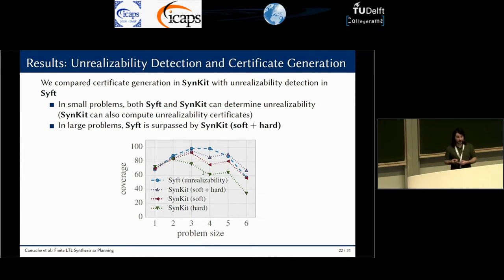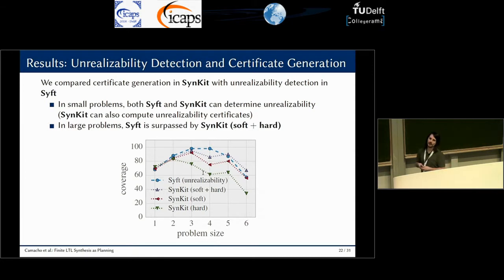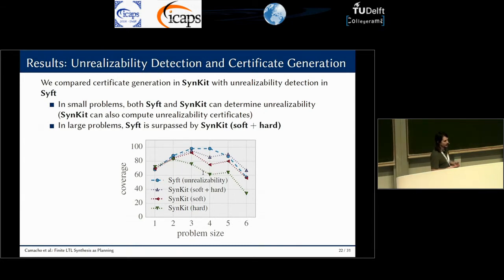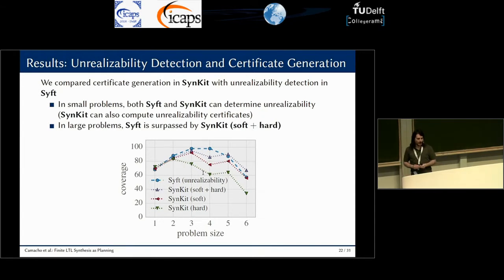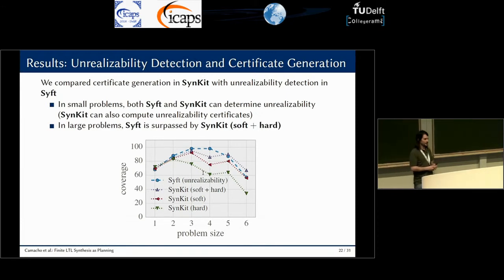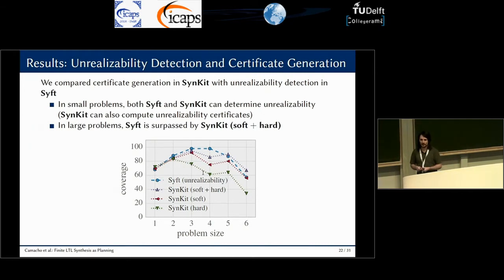In the third round of experiments, we tested the performance of our system in computing unrealizability certificates. Since our system is the only one that does so, we compared SyncIt with certificate generation against SIFT for detecting unrealizability. We found that SyncIt has better scalability on large problems, with the additional benefit that we not only detect unrealizability but also generate certificates of unrealizability.